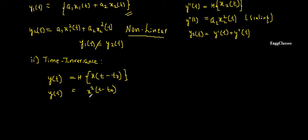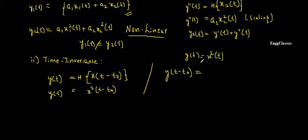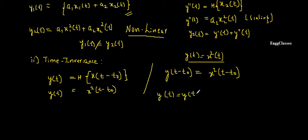Next, I consider a shift in the output: y(t - t0). Since y(t) = x²(t), replacing every t with (t - t0) gives y(t - t0) = x²(t - t0). Testing the condition, both the shifted-input output and the shifted output are equal, so the system is time invariant (TIV).